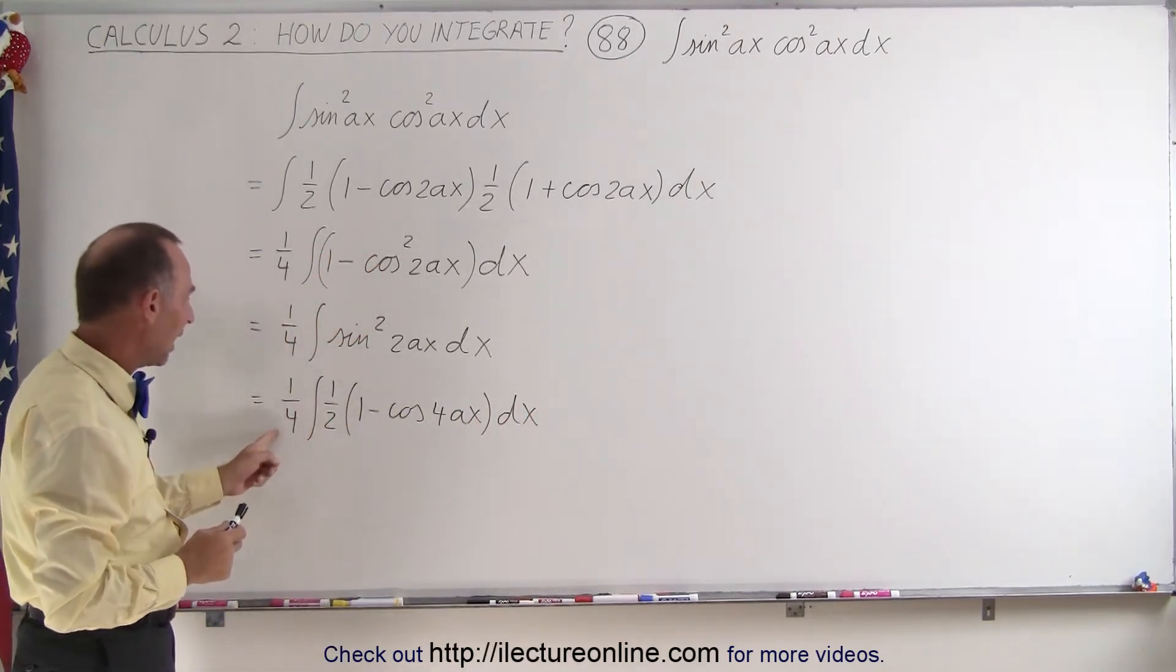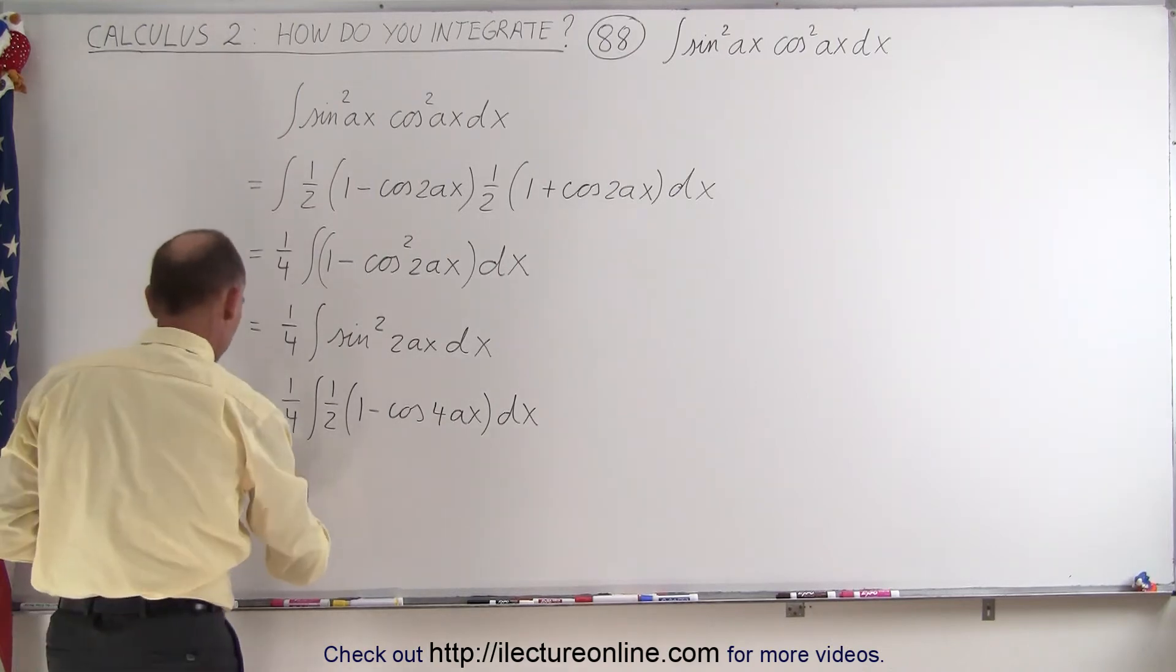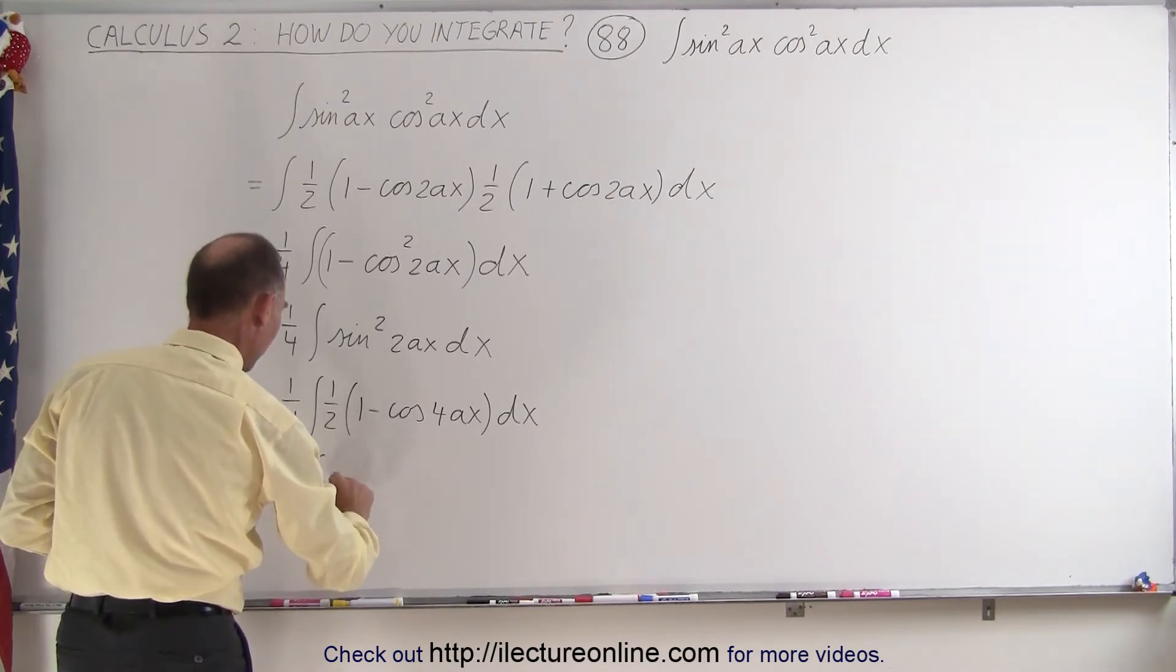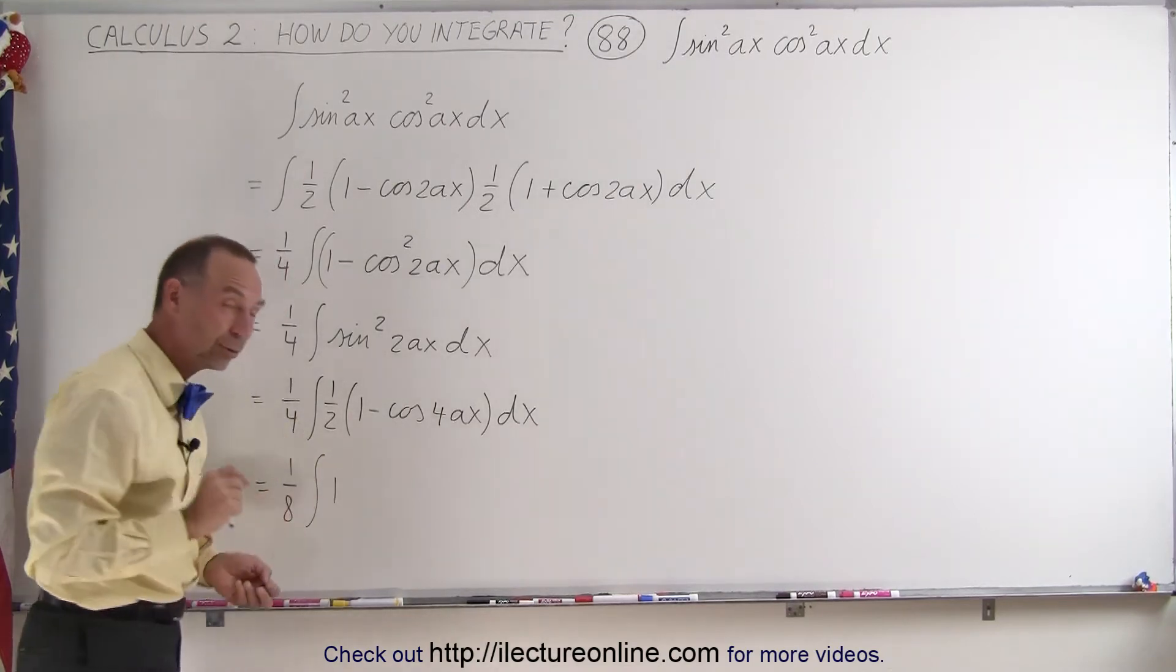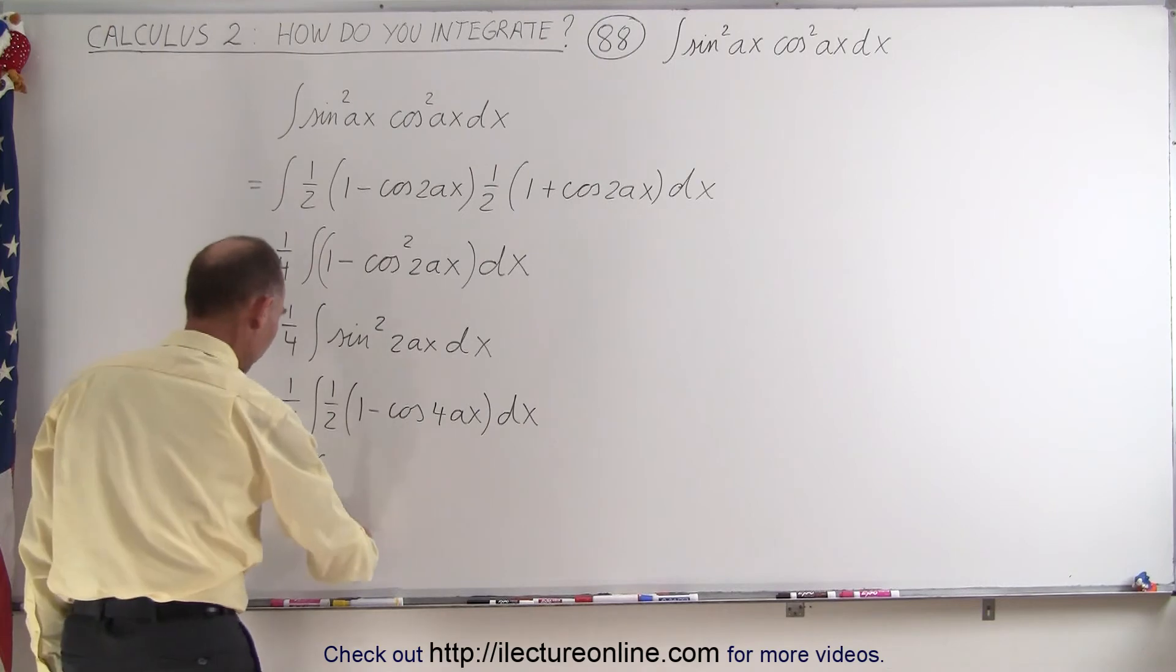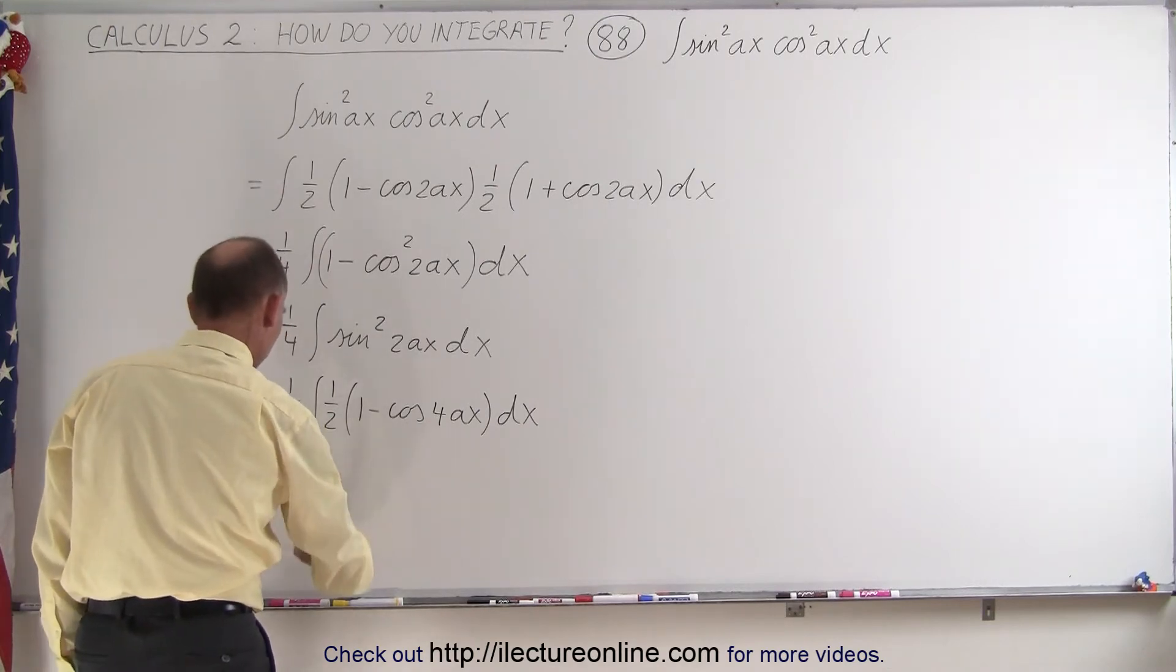First we're going to bring the 1 half out, so this will be 1 eighth, so let's do that. This is 1 eighth times the integral of 1 minus, and actually I'm going to write that as two separate integrals, so write this as the integral of dx.